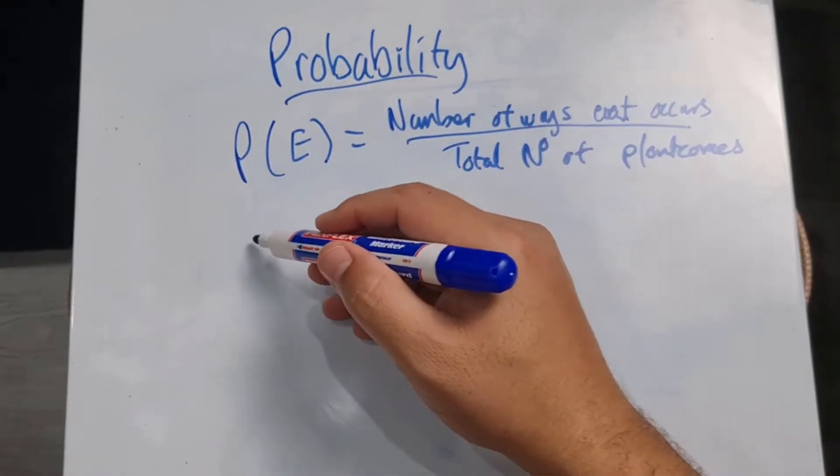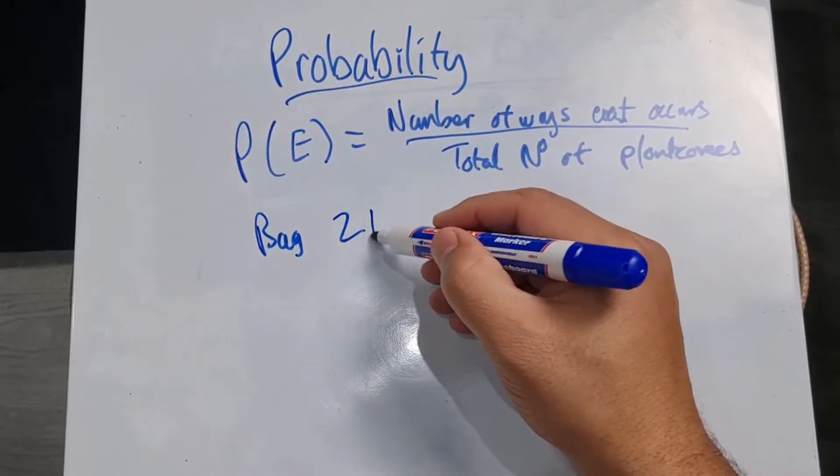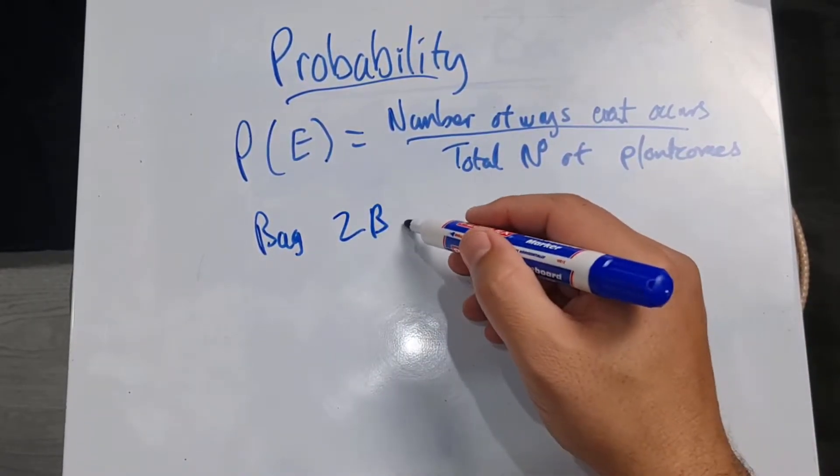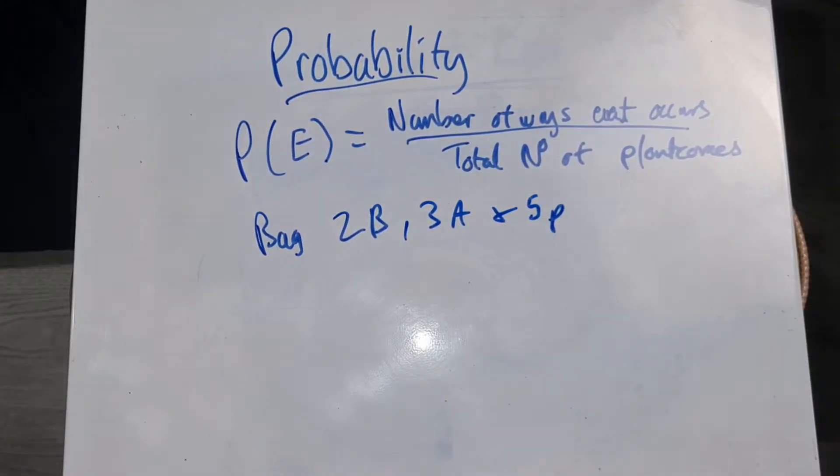So if they say to us that we have a bag and that bag has two bananas, three apples and five pears, and then they ask us the question, what is the probability of choosing a banana?